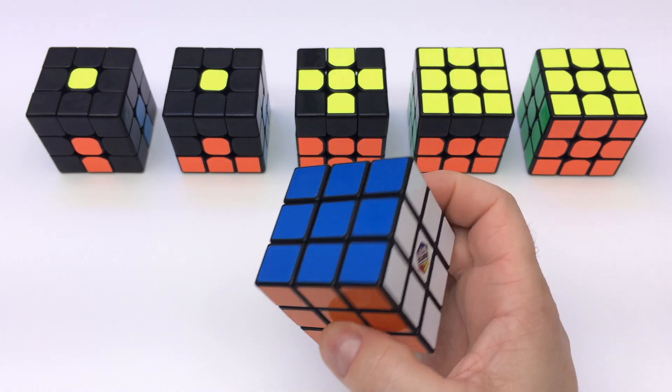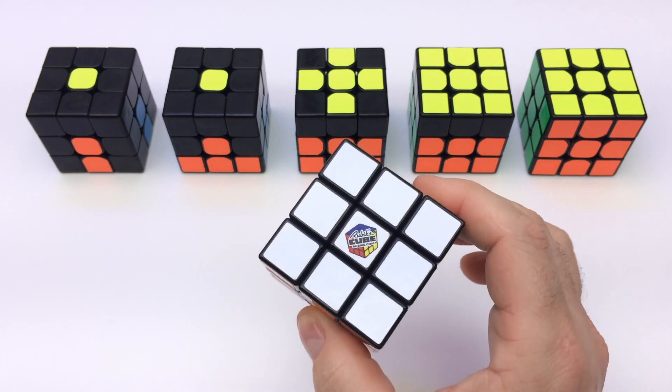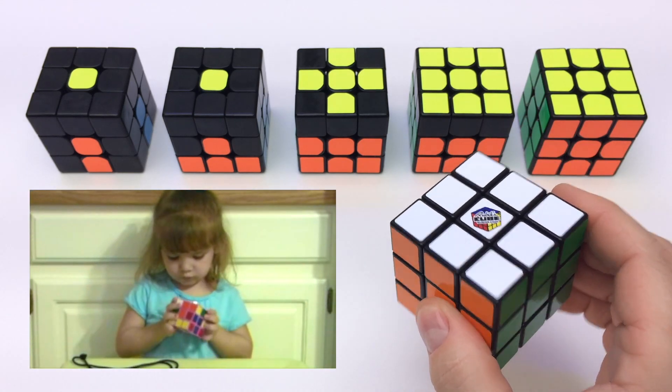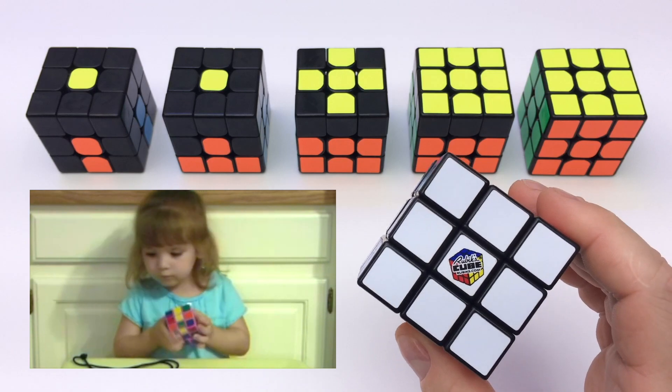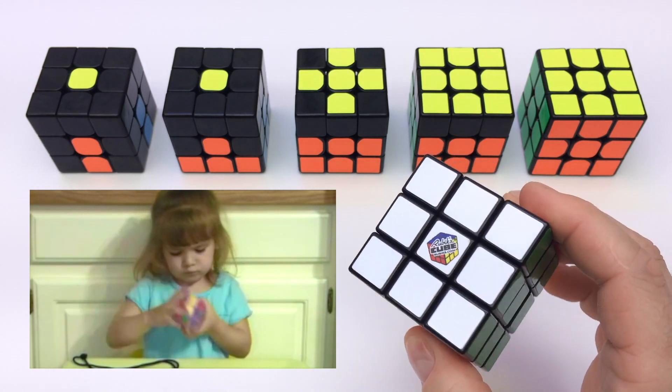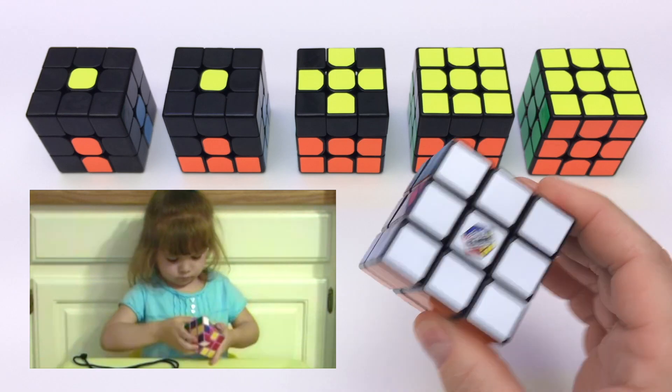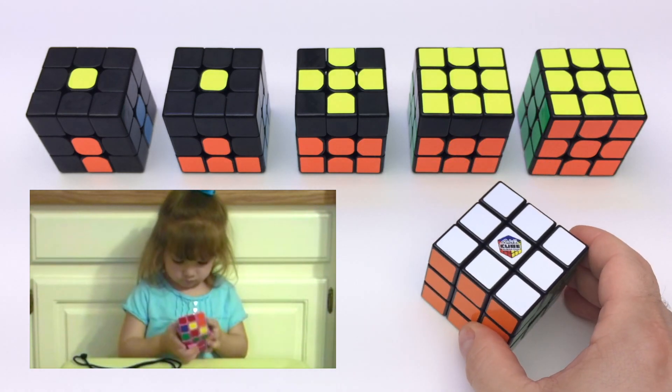In this video we will learn an easy method to solve the Rubik's Cube. This is the same method that Emily used when she was just three years old to solve the cube. We believe this is the easiest method to learn because it focuses primarily on understanding how the cube works and what is necessary to solve it.